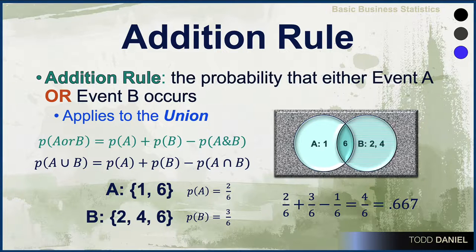Two-sixths plus three-sixths is five-sixths, minus one-sixth equals four-sixths, or two-thirds, or approximately 0.667. There is, however, a special case for the addition rule.